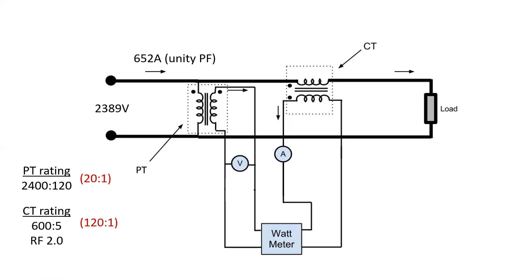At this point, what we're going to do is calculate what the voltage is on this voltmeter. So, we've got 2389 volts and a 20 to 1 PT rating. So, if we're familiar with ratios, it means that we're going to take 2389 and divide it by 20. So, that means that the voltmeter, which is on the PT secondary, should be registering about 119.45 volts. The CT is connected to an ammeter. What value is the ammeter reading? Well, it's 120 to 1 and it's 652 amps. So, 652 divided by 120 gives me 5.43 amps. So, the ammeter is registering 5.43 and the voltmeter is measuring 119.45.